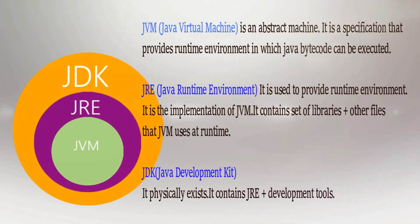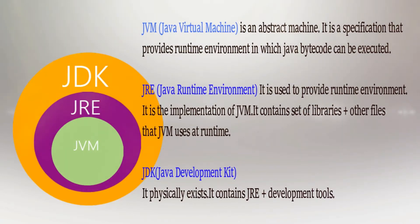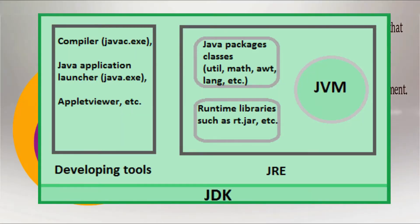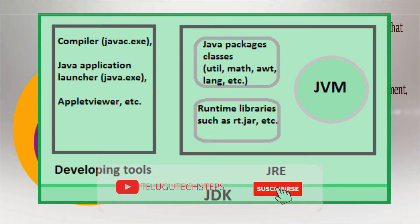JVM is the Java Virtual Machine — it is virtually available. But JRE physically exists. It contains a set of library files and other files that JVM uses at runtime. JRE provides a set of libraries and JAR files.